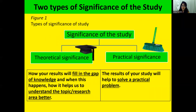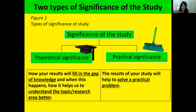There are two types of significance: theoretical significance and practical significance. Theoretical significance — I signify academia using the mortarboard, so this is for the university. For practical significance, I use a broom to signify usefulness. Theoretical significance is about how your results will fill in the gap of knowledge and help us understand the topic or research area better. Practical significance is how your results will help solve a practical problem. It is good if you can write about both.